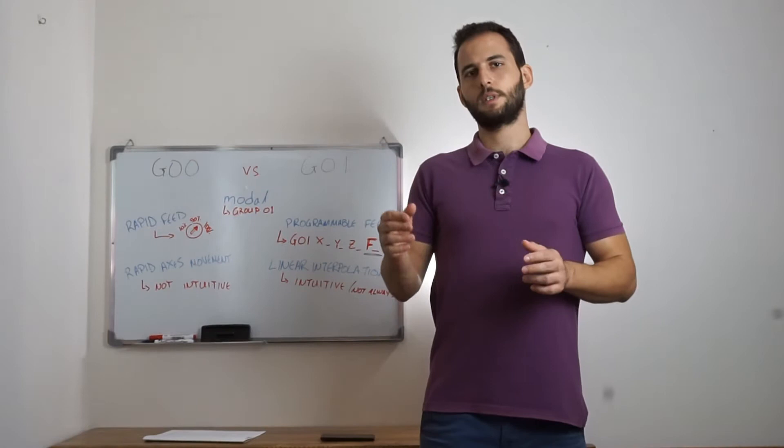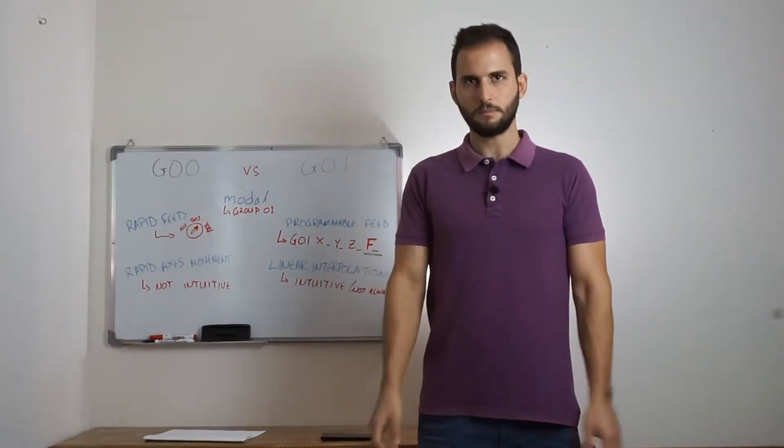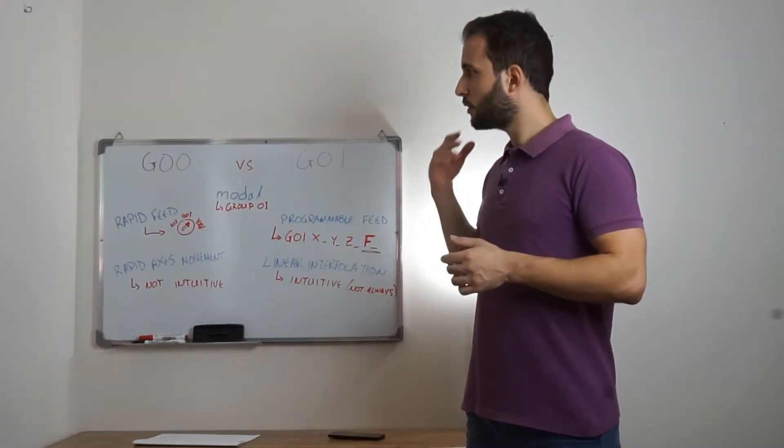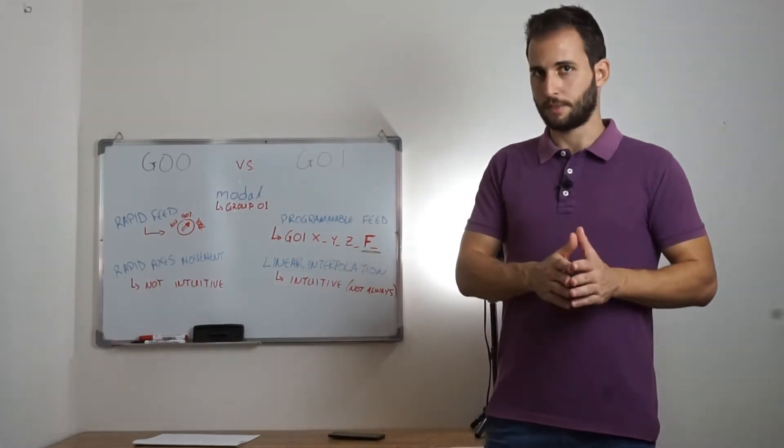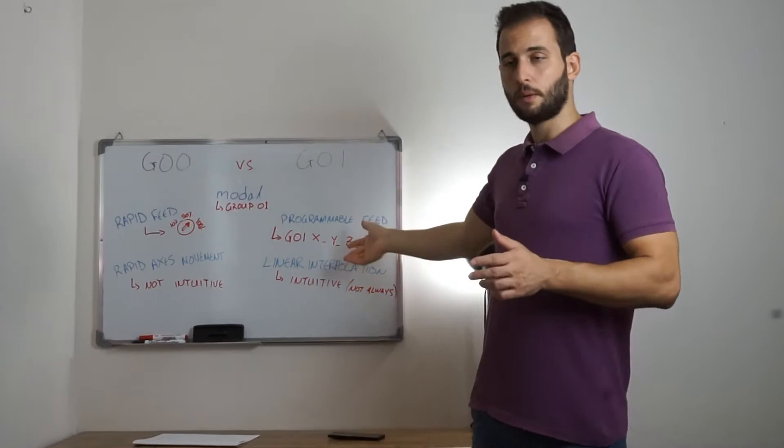It has to be noted that G2 and G3 also belong to the first group. The main difference between these two commands is that when we program G0, we cannot program feed rate of the axis, and when we program G1, we can program the feed rate of the axis.